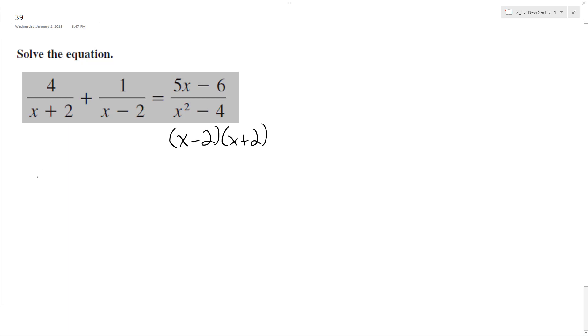So on the left side, I'm going to have four times x minus two plus one times x plus two, and all this is going to be over the common denominator x minus two, x plus two. And we'll have five x minus six over x minus two, x plus two.